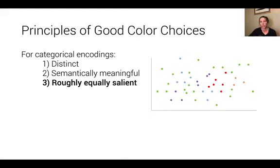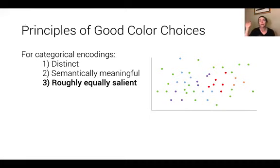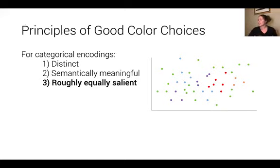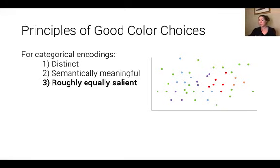Finally, we want our values to be roughly equally salient. When we talk about perception, we'll discuss how our eyes are immediately attracted to highly salient targets. If we make certain values in our visualization highly salient, people will start their analysis there. With categorical data this can be a problem — for example, if I have this scatterplot, my eye might immediately be attracted to bright red points, meaning every reader gives more visual weight to them.